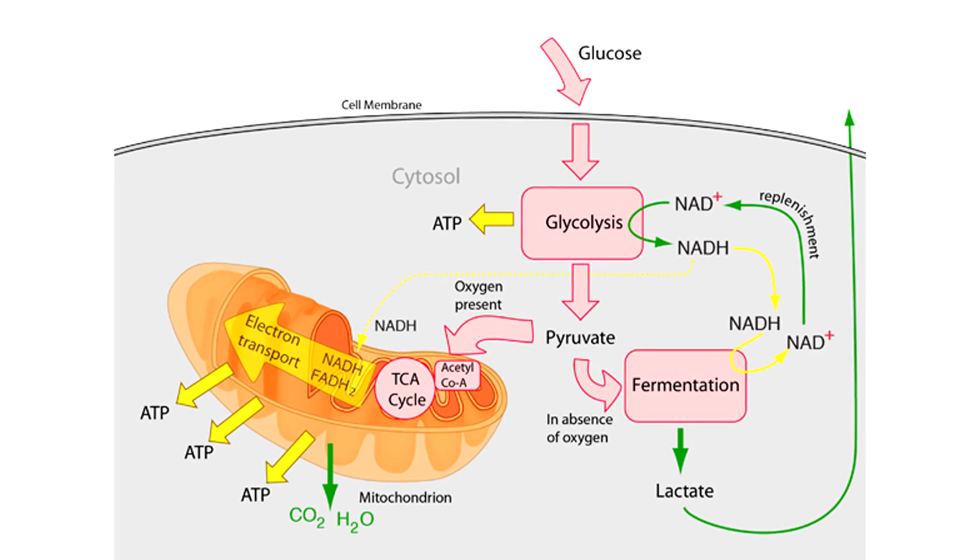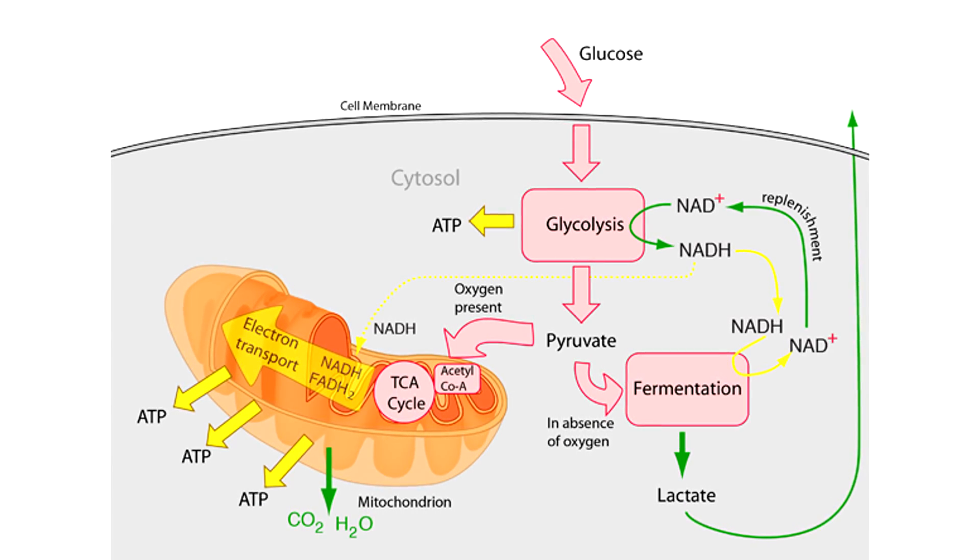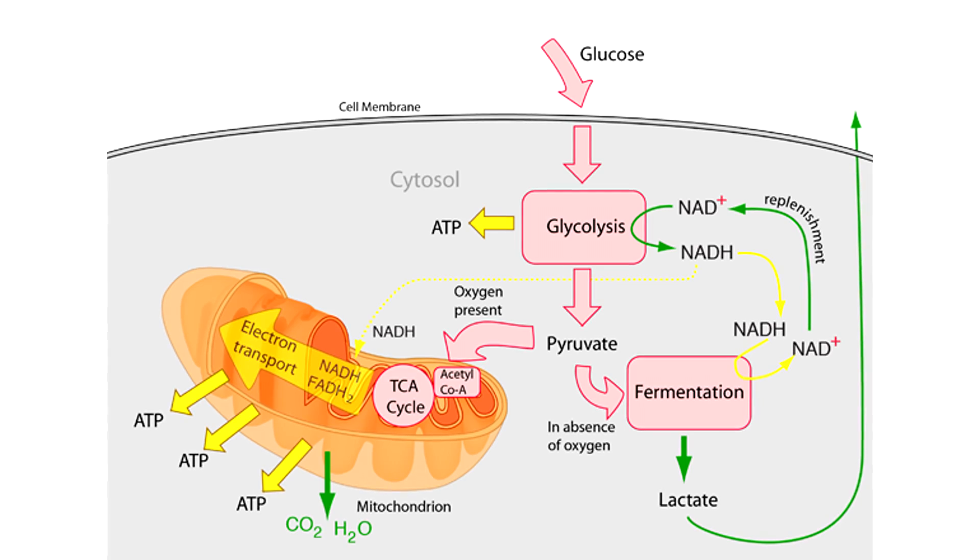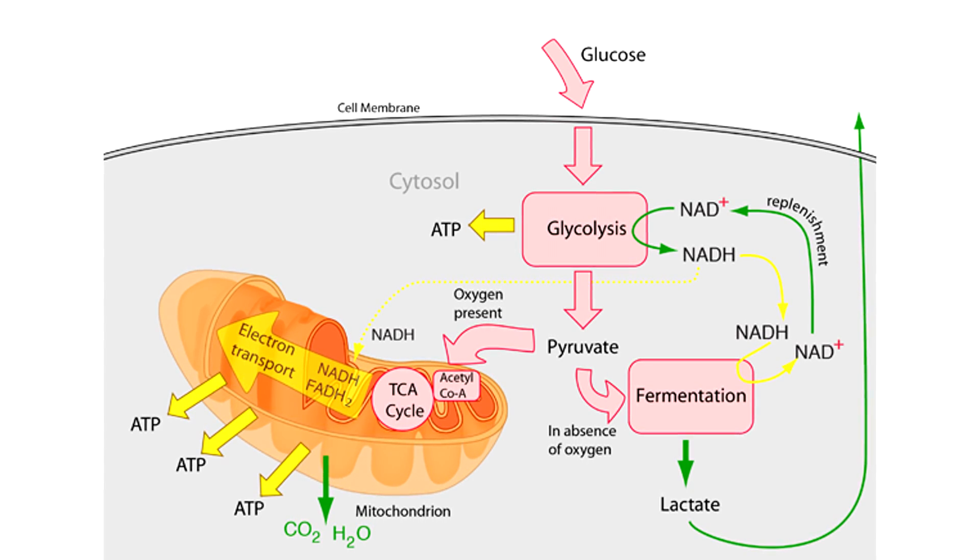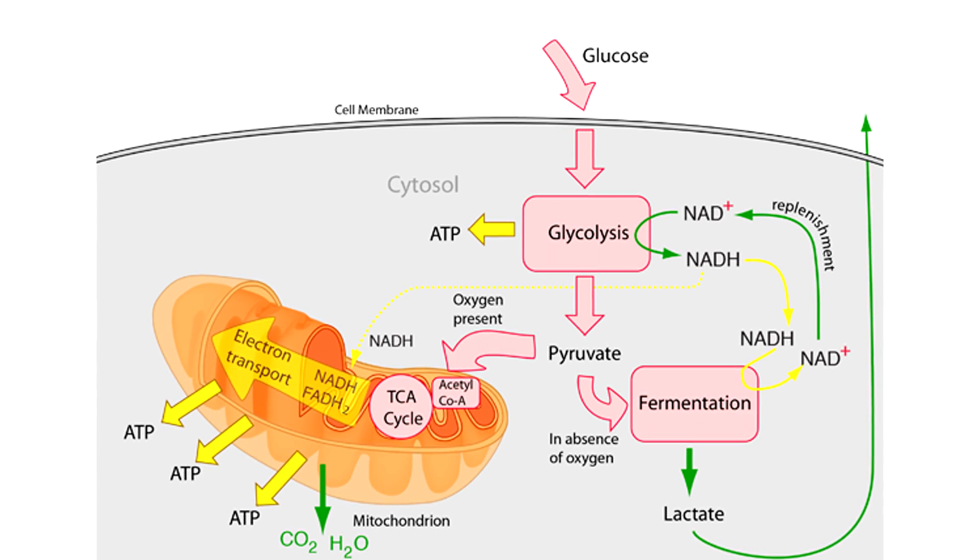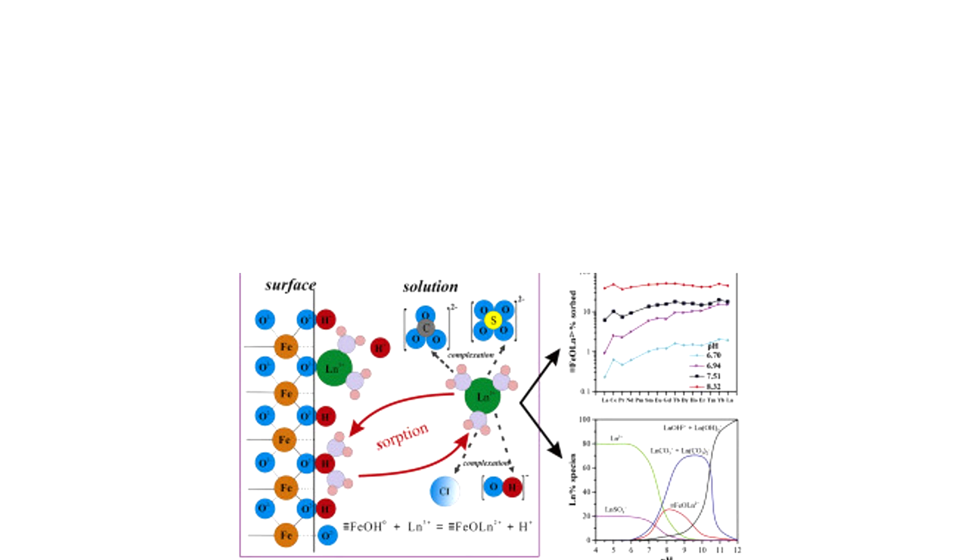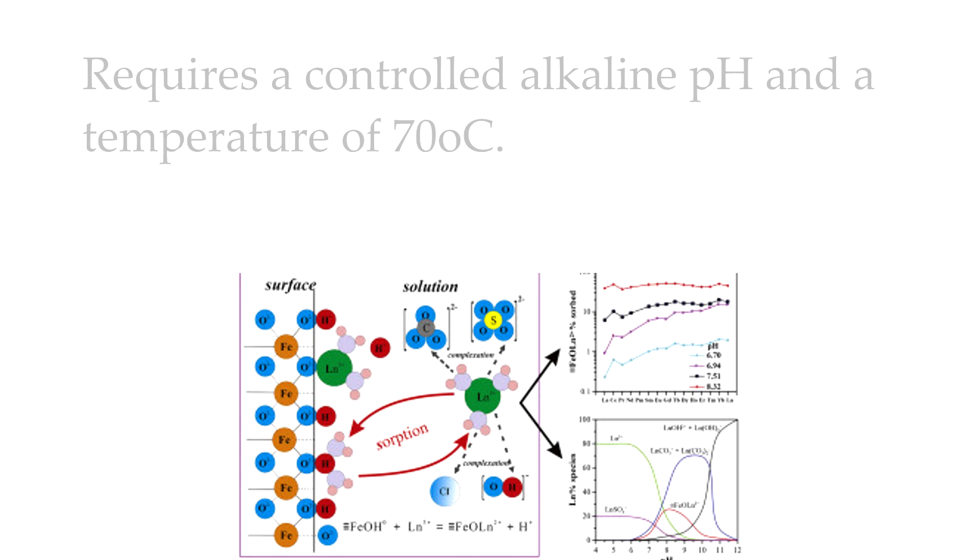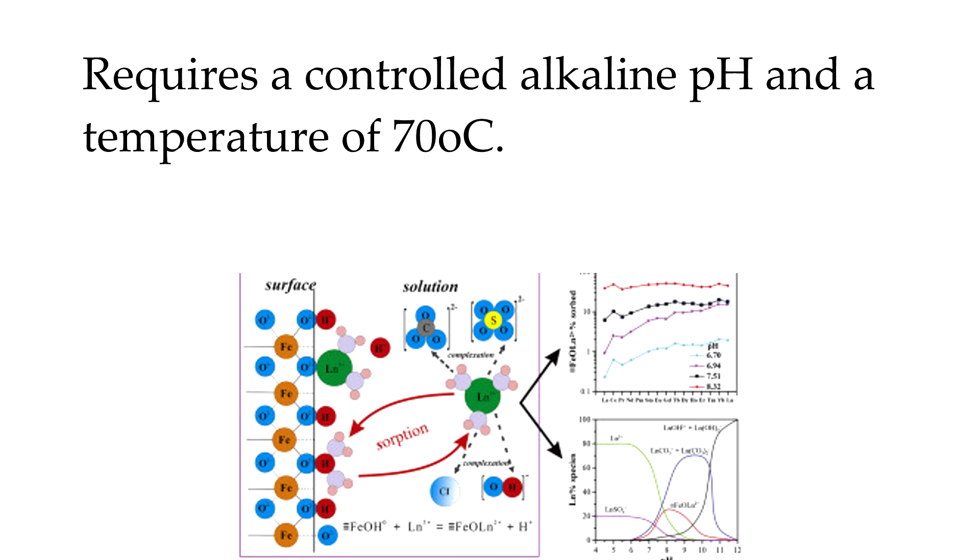And adding to the origin of life absurdity surrounding this research was the fact that the starting compound of pyruvate is typically only produced in living cells in a metabolic pathway starting with glucose. On top of that, the reaction with iron oxyhydroxide could only productively take place at the controlled alkaline pH and a temperature of 70 degrees Celsius.